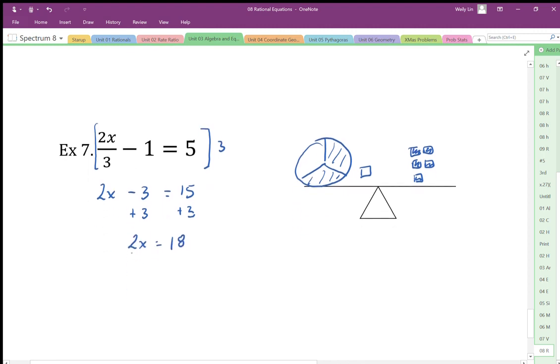Divide by 2. Divide by 2. I end up with x equals 9. Okay, so that's my final solution. Thank you. Give me a couple more examples.